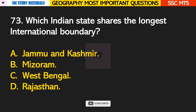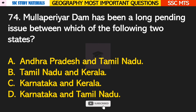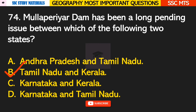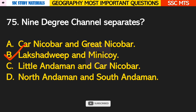Question number 73: which Indian state shares the longest international boundary? Answer C — West Bengal. Question number 74: Mullaperiyar Dam has been a long pending issue between which two states? Answer B — it is between Tamil Nadu and Kerala. Question number 75: the Nine Degree Channel separates? Answer B — it separates Lakshadweep and Minicoy.